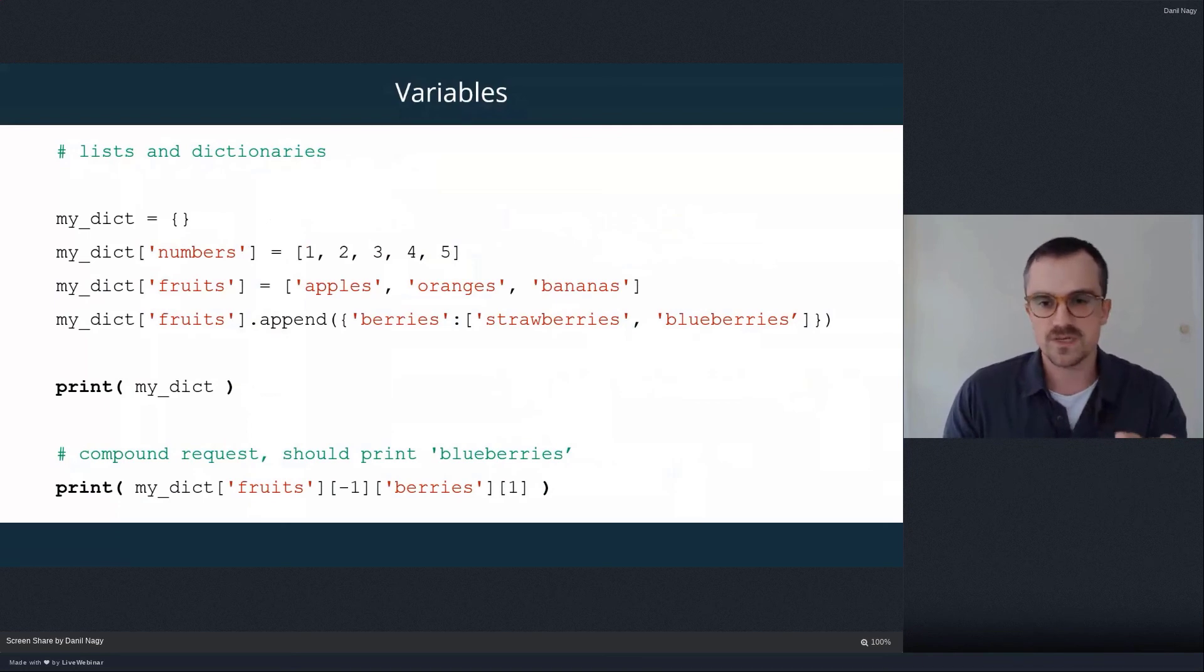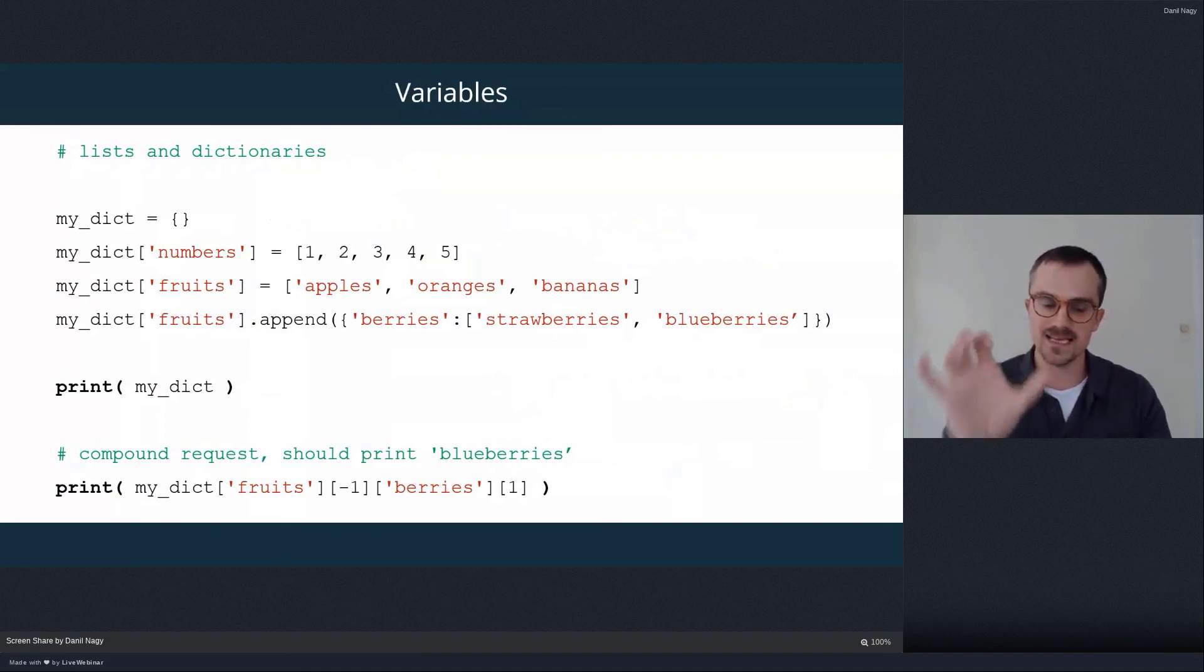So here's a simple example that you should copy and paste into your Python window and try to run it. So we basically start with an empty dictionary. Now we're going to add an entry to that dictionary. And you see the key for that entry will be numbers. And the value is actually going to be a list. So now we're nesting a list of five integers into the value of an entry in our dictionary.